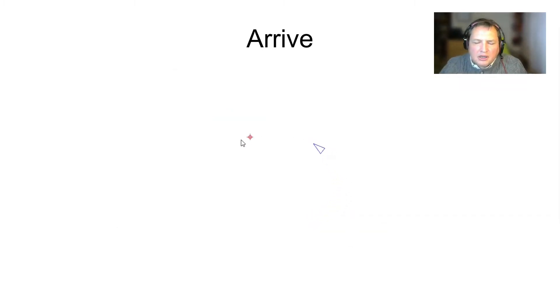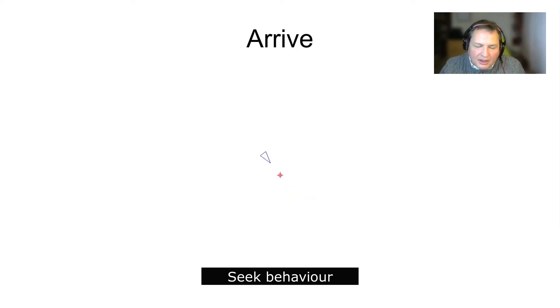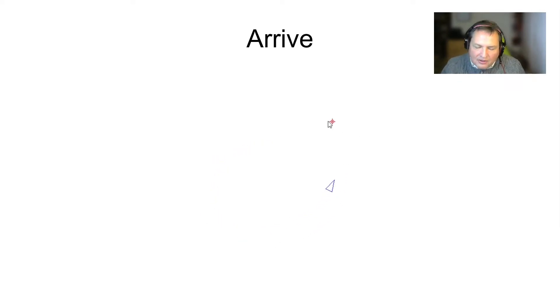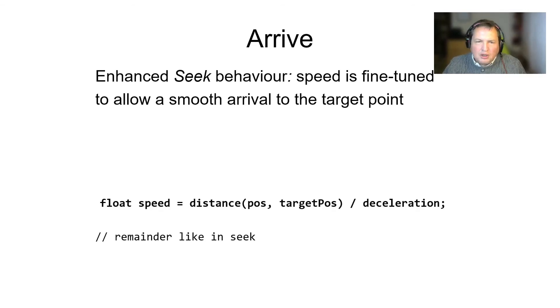The arrive behavior is very similar to the seek behavior. The difference is that the seek pattern always applies the same constant speed, and sometimes it overruns the desired destination, particularly if the target is stationary. Arrive is an enhanced version in which the speed is fine-tuned to allow a smooth arrival at the destination point. As you can see from the pseudocode, the speed is made proportional to the distance between the agent position and the target position. Therefore, when the agent gets closer to its target, its speed gets lower.